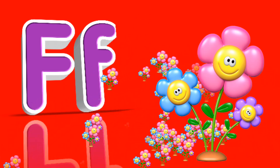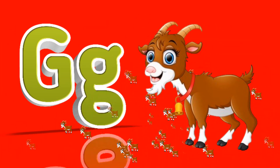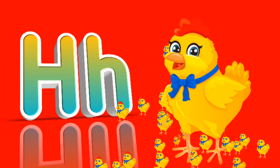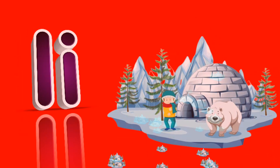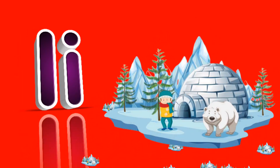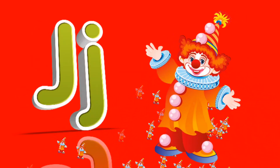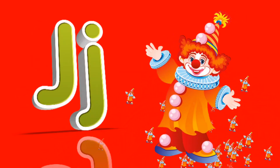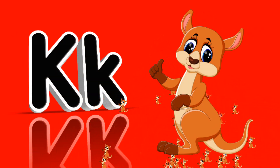F for flower. Z for goat. H for hen. I for igloo. J for joker. K for kangaroo.